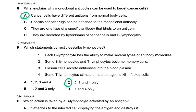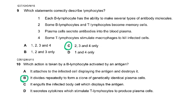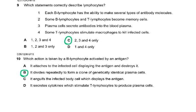Question eight: what explains why monoclonal antibodies can be used to target cancer cells? The reason is cancer cells will have a different antigen from normal body cells, so you can target them, put a little drug with it, and these antibodies will go and lock onto the cancer cell and destroy it. Question nine asks which statement correctly describes lymphocytes.